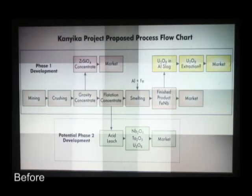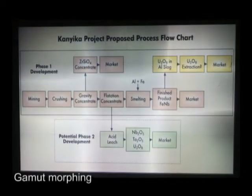Our gamut morphing method consists of three steps. First, we morph the two-dimensional chrominance gamut of one projector to that of another over an overlap region. This is achieved by precisely controlling the individual brightness contributions from each projector, assuring that the chrominance gamut is morphed in a smooth and constrained manner across the overlap regions.